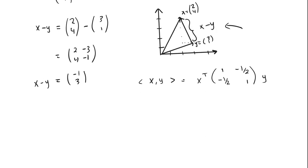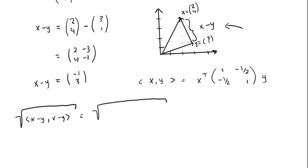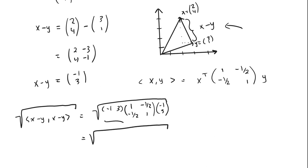Let's calculate the length of x minus y using this inner product. We write this as the square root of the inner product of x minus y with itself, which is (-1, 3) times the matrix [1, -1/2; -1/2, 1] times (-1, 3). The first matrix multiplication gives a 1 by 2 vector with entries: negative 1 times 1 minus 3 over 2, and positive 1 over 2 plus 3.